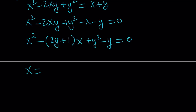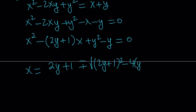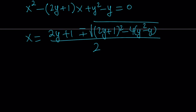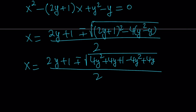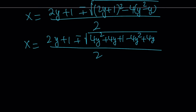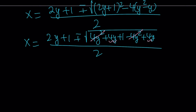The quadratic formula gives us negative b plus or minus the square root of b squared, which is 2y plus 1 squared, minus 4ac, which is 4 times y squared minus y, and all of that is divided by 2a, which is 2. Let's go ahead and simplify what's under the radical. We get 4y squared plus 4y plus 1 minus 4y squared plus 4y, and then the whole thing is divided by 2. We can go ahead and cancel out 4y squared.